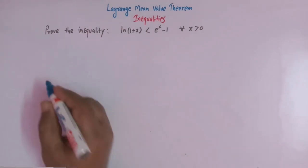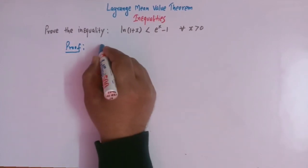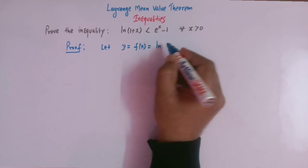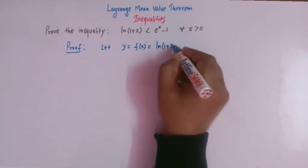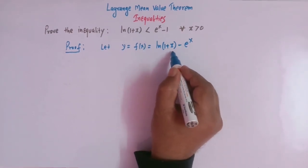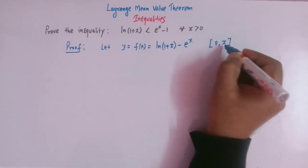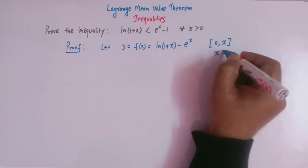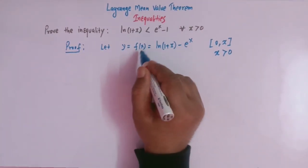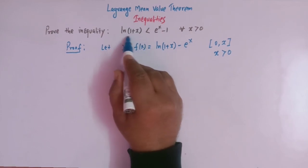First of all, we will assume an appropriate function. So let us assume a function f(x) = log(1+x) - e^x. We will define it for the interval [0, x] where x is greater than 0. We will prove this inequality with the help of this function by applying the conditions of Lagrange's mean value theorem.